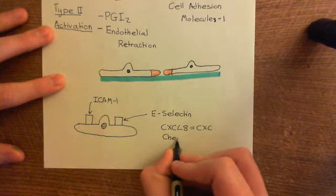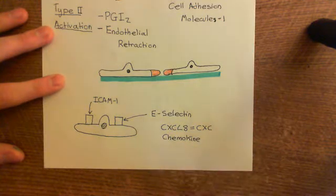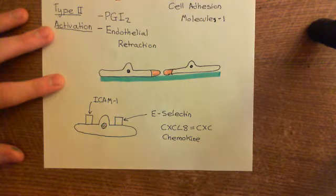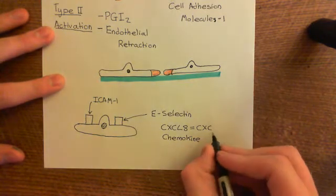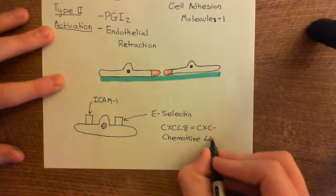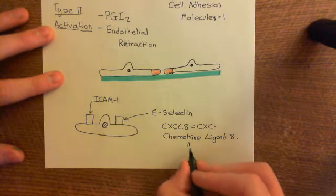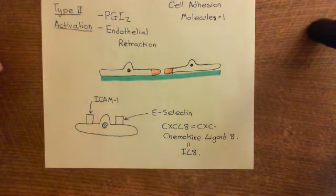Chemokines are proteins that all have a conserved structure. There are four main families: the CXC chemokines, the CC chemokines, the C chemokines, and the CX3C chemokines — with CXC and CC being the most important. CXCL8 is a member of the CXC chemokine family, standing for CXC chemokine ligand 8. It is also known as interleukin-8, and it's a very small protein of between 8 and 10 kilodaltons.